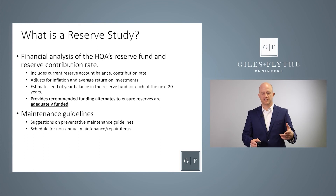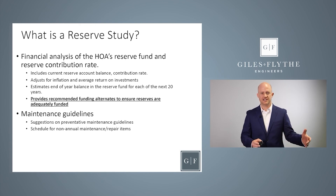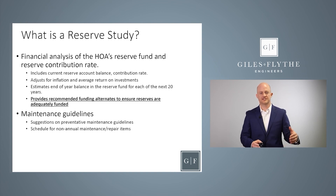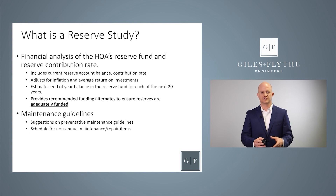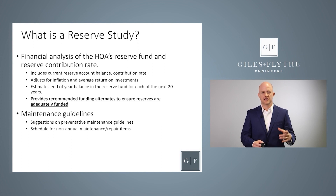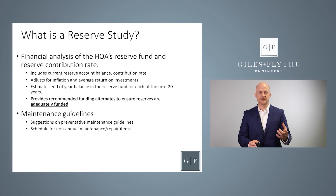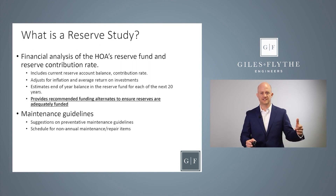The reserve study report, as mentioned, is typically 40 to 50 pages. There's a narrative section that's usually the first 10 to 20 pages, going through paragraph by paragraph describing what the association is responsible for and the condition of those components. It will also cover the funding recommendations and the general process of the reserve study. The report will also typically include all the data set up in tables or spreadsheets.